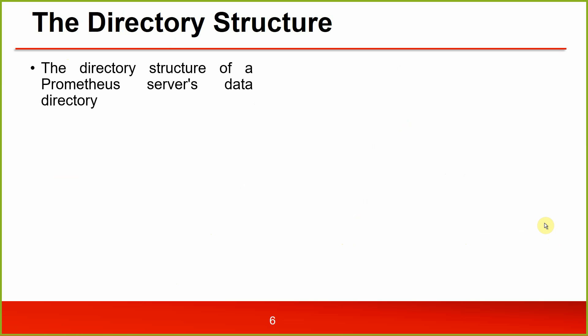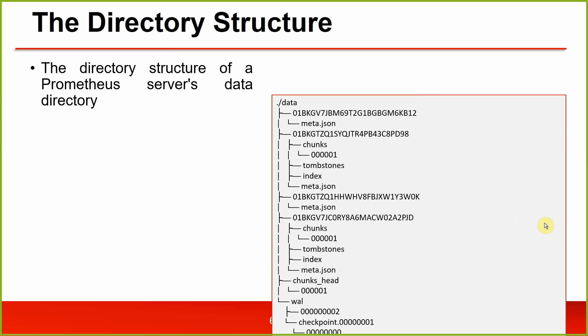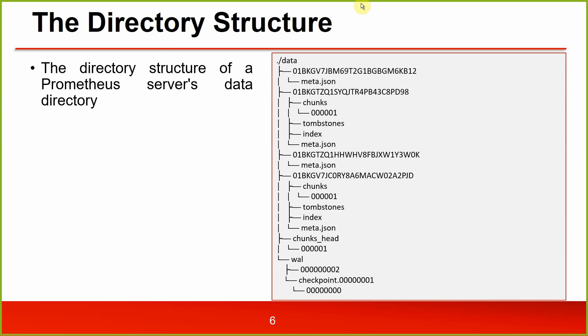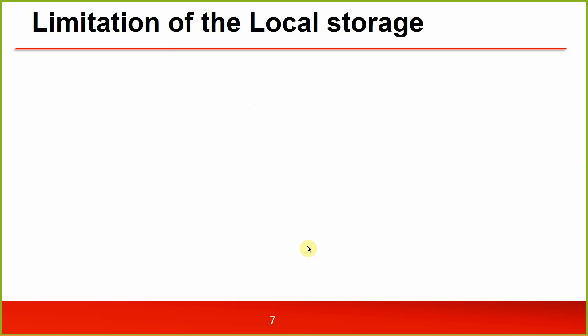The directory structure of the Prometheus service data directory looks like this: under /data you will have these directories — meta.json, chunks (which I was talking about), tombstones, index, and meta.json. That is also where the WAL directory is located. A limitation of local storage is that it is not clustered or replicated, so if the system crashes, the data is gone.